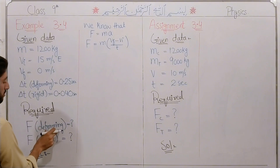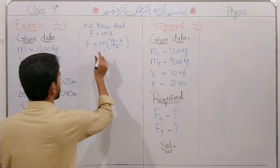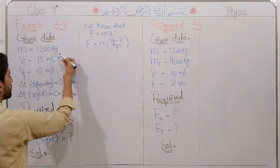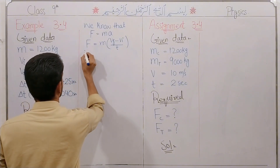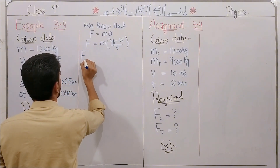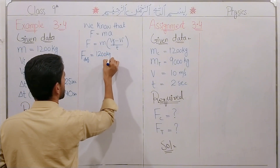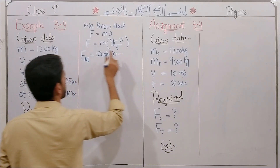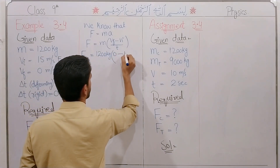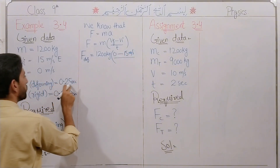For the deforming force on the motor car, they give us the mass, the initial and final velocity, and the time. The mass is 1200 kg. The final velocity is zero. The initial velocity is 15 meters per second, and the time is 0.25 seconds.